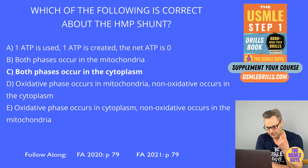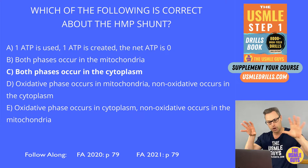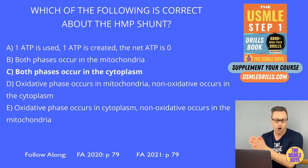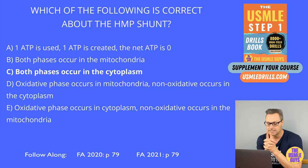That NADPH is needed for reduction reactions, cholesterol synthesis, and fatty acid synthesis, whereas the ribose is needed for nucleotide synthesis. There are two phases in this pathway: the oxidative and the non-oxidative phases. Don't forget which of these is irreversible — that would be the oxidative portion. And both happen in the cytoplasm — that's a trick question.